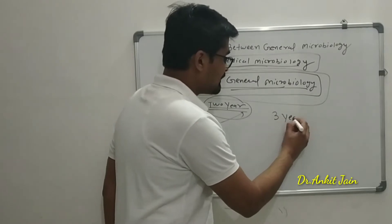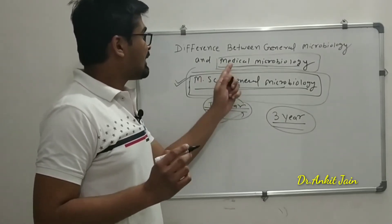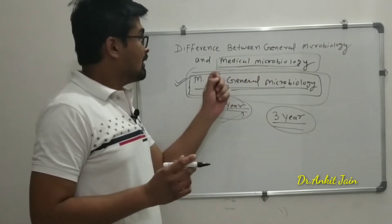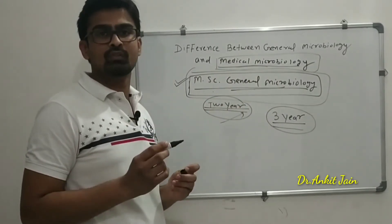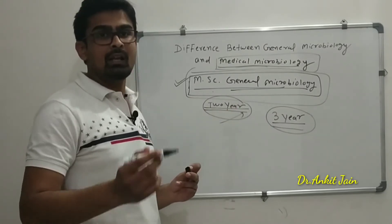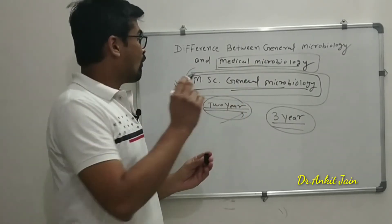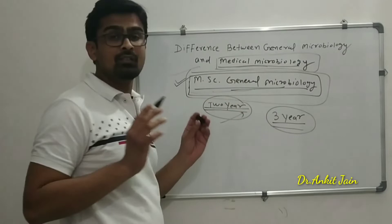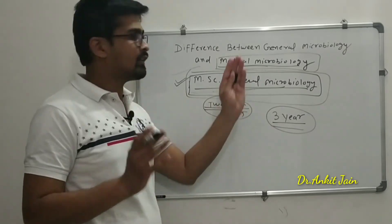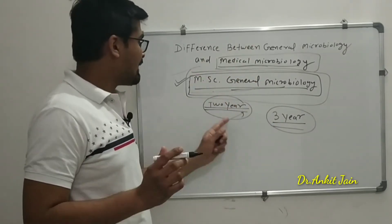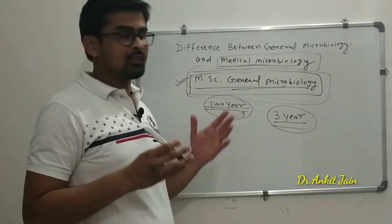MSc in medical microbiology is generally offered only in medical universities — those universities which have MBBS courses and other medical courses. All normal universities offer MSc in general microbiology. The basic difference is that the application part is totally different for these two courses, and the duration is also different — there is one extra year in MSc in medical microbiology.